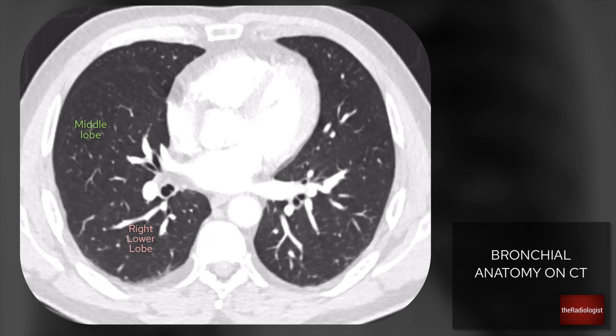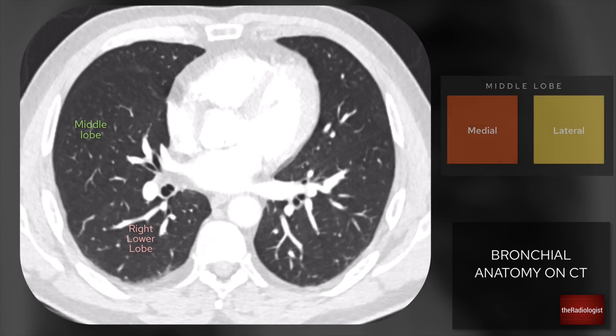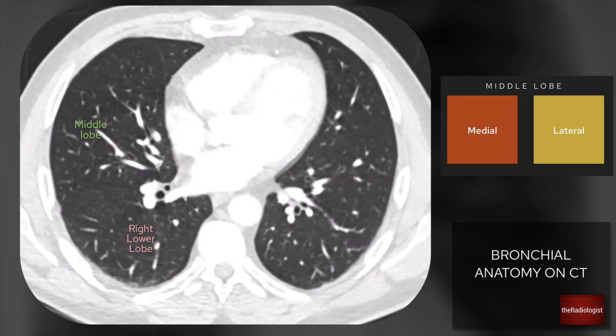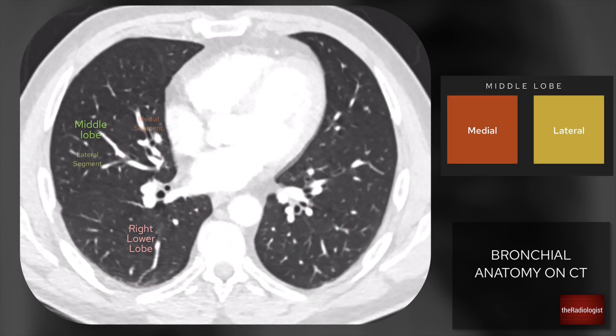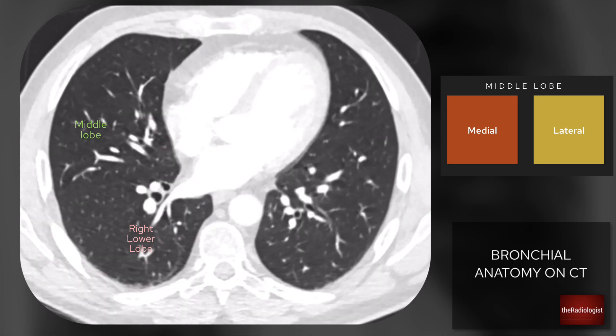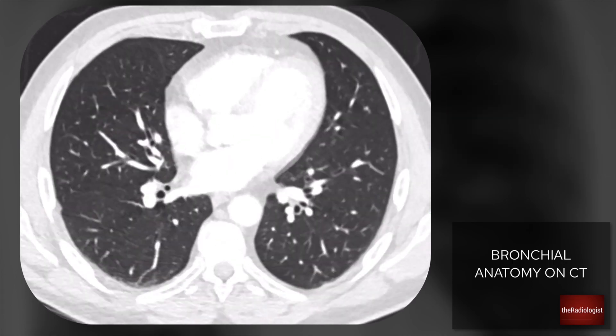The middle lobe, fairly easy to remember, has only two segments: the medial and the lateral. They sit side by side. The medial segment sits next to your right heart border. Remember on your chest x-ray, if you ever get the loss of silhouette sign, it's because you've got pathology within the medial segment of your middle lobe - that's the bit that sits next to your right heart border. So medial and lateral segments in your middle lobe.